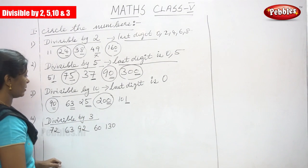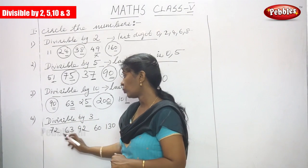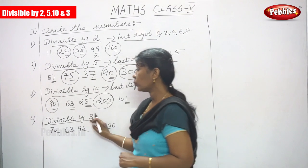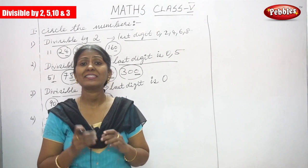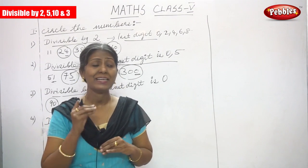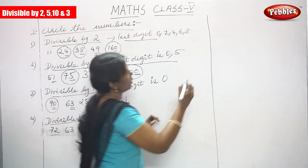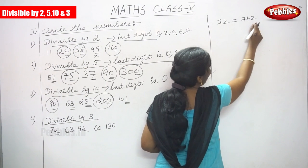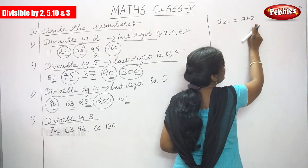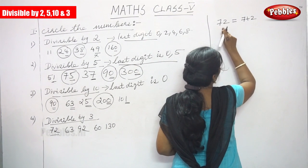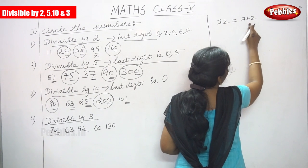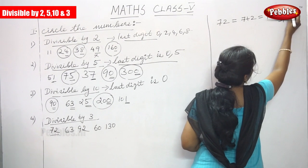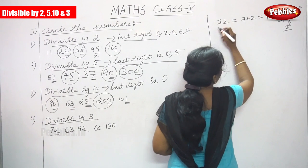The 4th sum is divisible by 3. The numbers are 72, 63, 92, 60, 103. What is the rule of divisible by 3? The sum of the digits must be divisible by 3. For 72: 7 plus 2 equals 9, and 9 is divisible by 3, so 72 is divisible by 3. Circle the number.